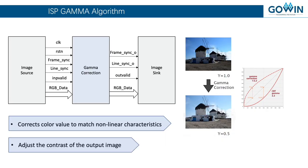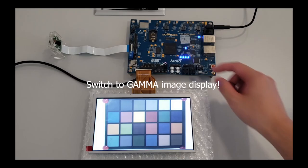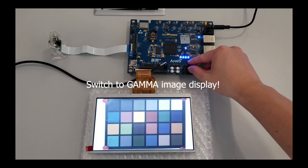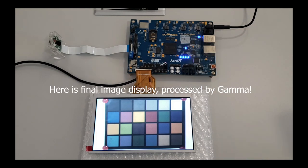For example, if you are using a 10-bit image sensor but are using a 24-bit RGB output, you would want to compress each color component from 10-bits to 8-bits.